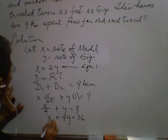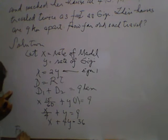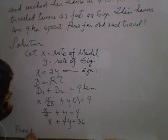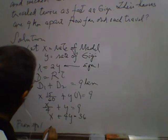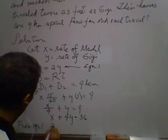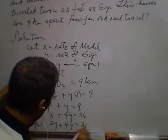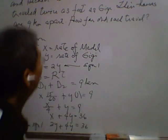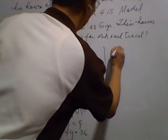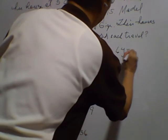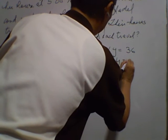From equation 1, X is equal to 2Y. We substitute 2Y into the equation: 2Y plus 4Y equals 36. Continuing, 6Y equals 36, so Y equals 6.